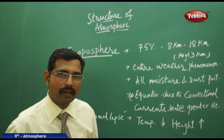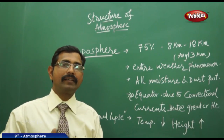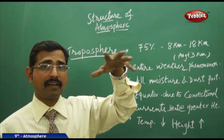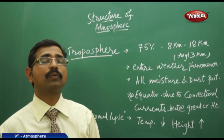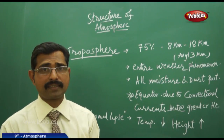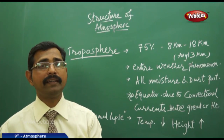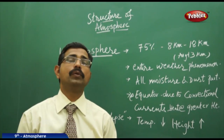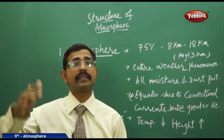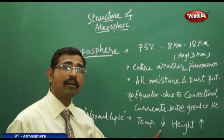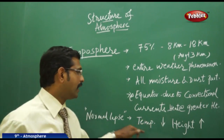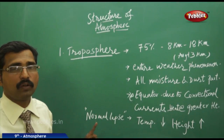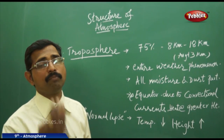As you go higher from the surface, the temperature decreases. For example, aircrafts and parachutes operate at around 5–6 km height, where the temperature is relatively lower than at the earth's surface. If you find 28 degrees Celsius at the earth's surface and go up 6–7 km, the temperature drops to around 25–26 degrees. This decrease in temperature with increasing altitude is called the normal lapse rate.